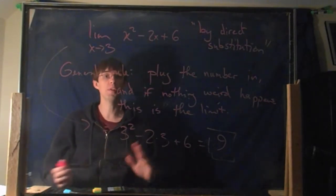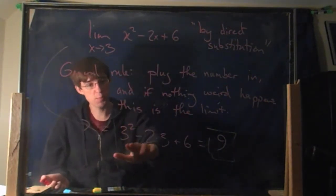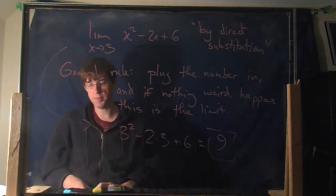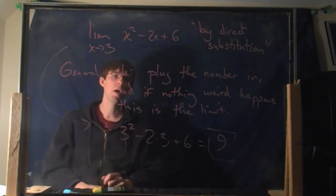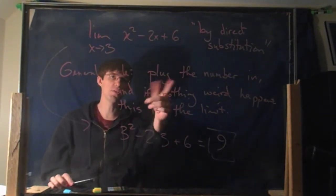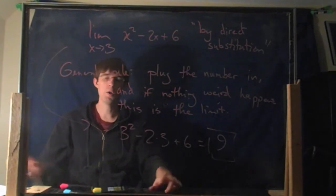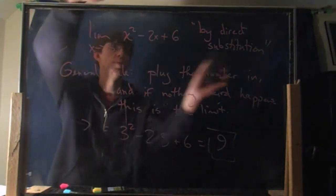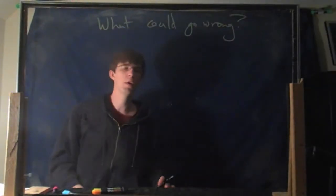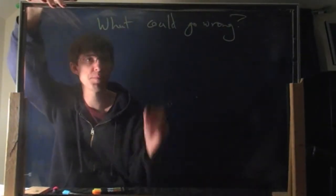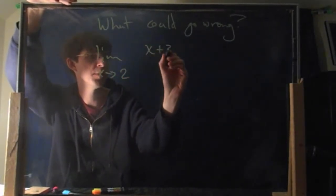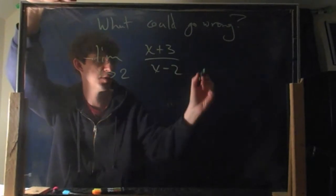This doesn't always work, but when it does work — that is to say, when you plug it in and you actually get some number — then that is the limit of the function. How could this fail to work? What could possibly go wrong? Here's one where something a little weird happens. How about this: limit as x goes to 2 of (x+3) divided by (x-2)?